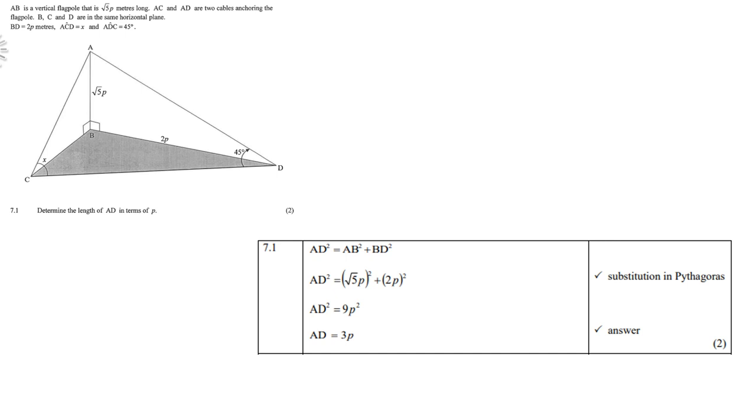Get rid of your brackets. Get rid of your square. And therefore, AD is equal to 3p. I will advise you to then write this on your sketch, because you might need this for the next question.